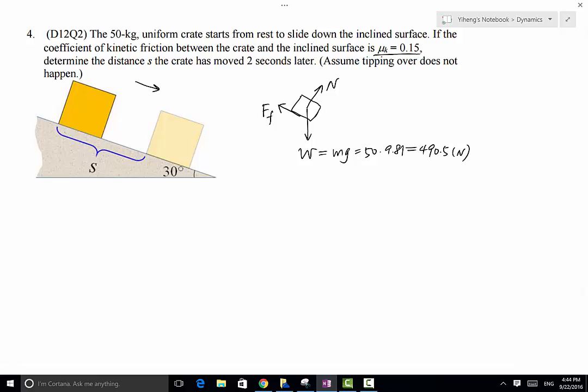Now we've completed the free body diagram, and we need to also draw a kinetic diagram. The movement is along this direction, so we can actually represent the crate as a point, as a particle, because tipping over does not occur. Therefore we can assume this crate to be a particle.